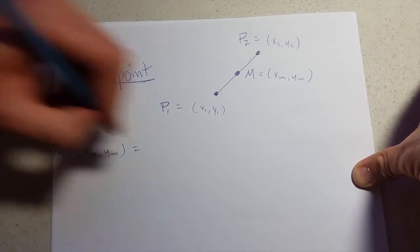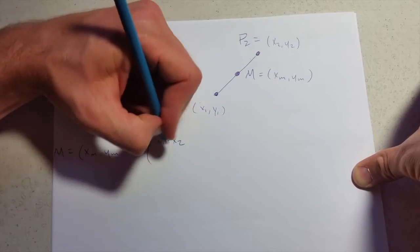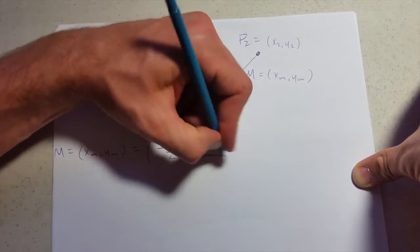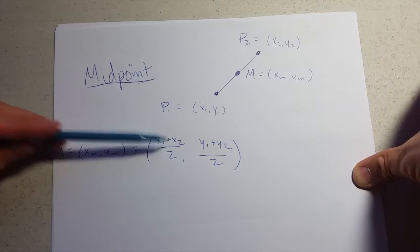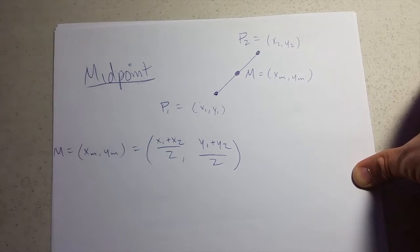So our midpoint is just x1 plus x2 over 2, comma, y1 plus y2 over 2. It looks really similar except you're adding and you're not taking any square roots here. You're just adding and dividing by 2. You're averaging the x's, average the y's.